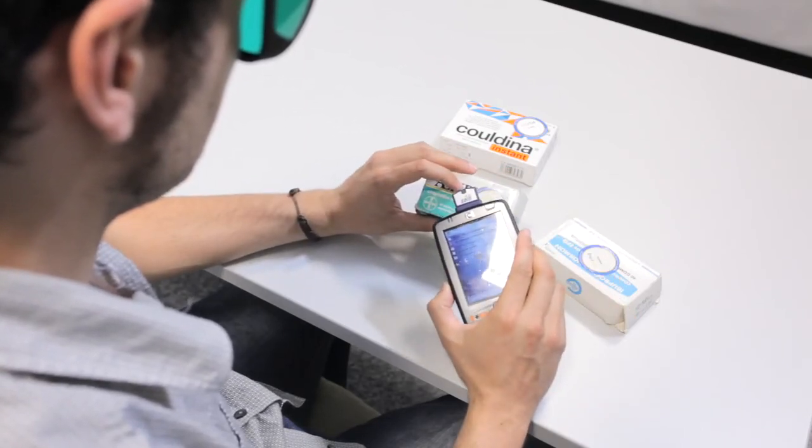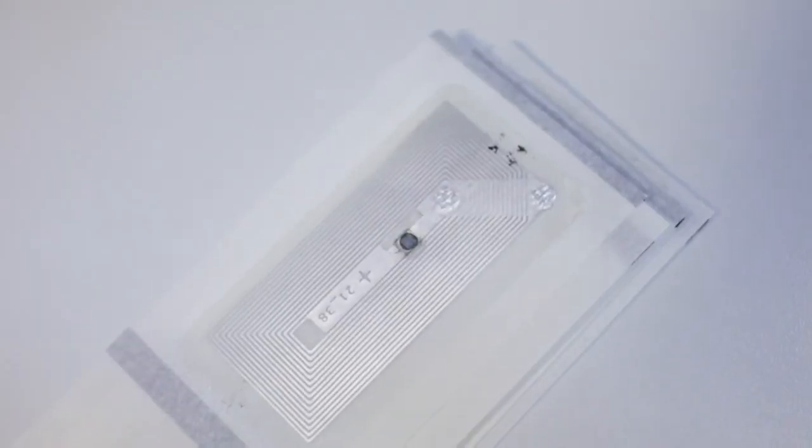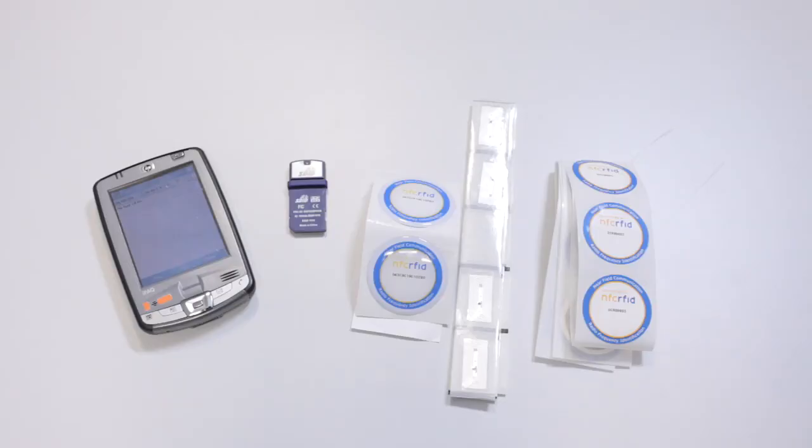There are different tag types according to the product you want to label. For example, if you need to tag a frozen product, you will need to use a special tag that supports the temperatures.